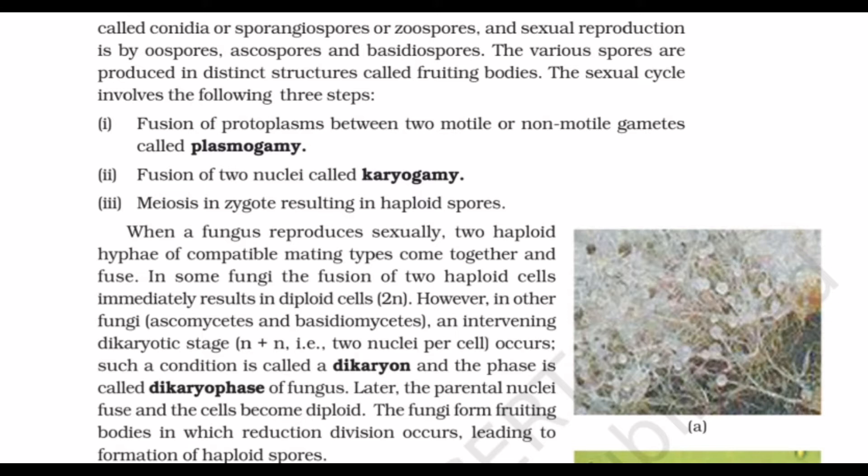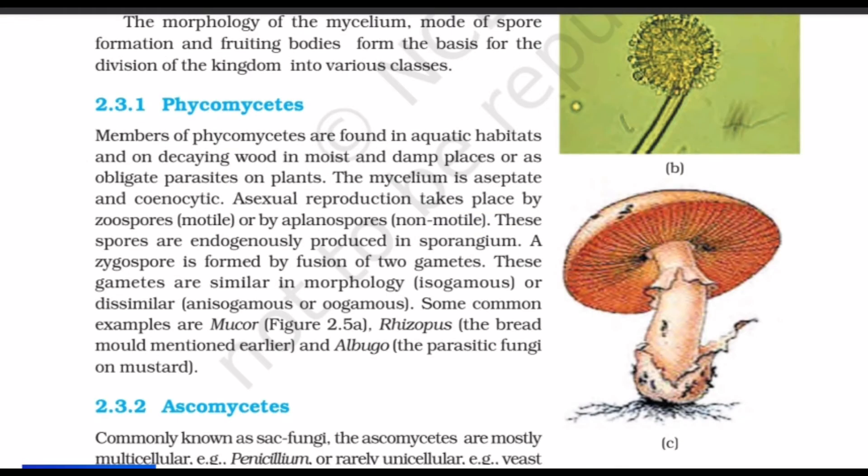The morphology of the mycelium, mode of spore formation, and fruiting bodies form the basis for dividing Kingdom Fungi into various classes. Class one of the fungi is Phycomycetes. Members of Phycomycetes are found in aquatic habitats, on decaying wood in moist and damp places, or as obligate parasites on plants.